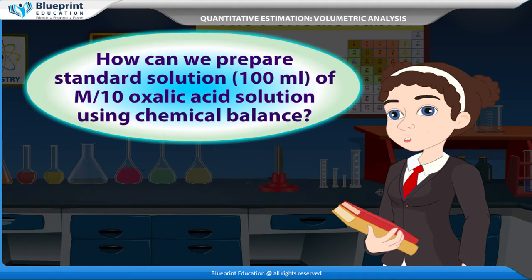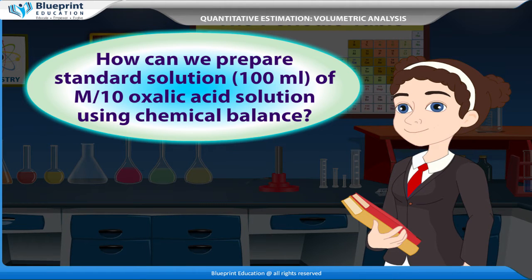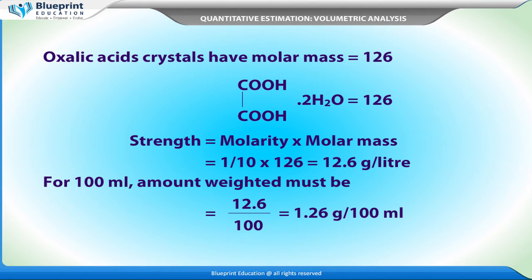Student: How can we prepare a standard solution of 100 ml of M by 10 oxalic acid solution using a chemical balance? Oxalic acid crystals have a molar mass equal to 126. COOH·COOH·2H₂O = 126. Strength equals molarity into molar mass: 1/10 × 126 = 12.6 grams per litre. For 100 ml, the amount to be weighed must equal 12.6/1000 × 100 = 1.26 grams per 100 ml.